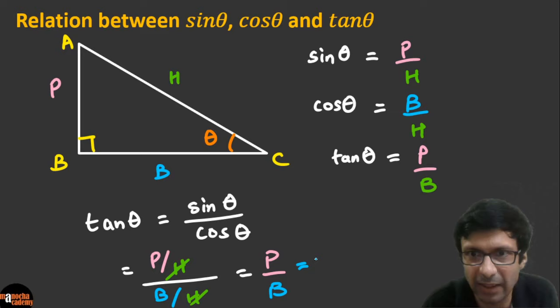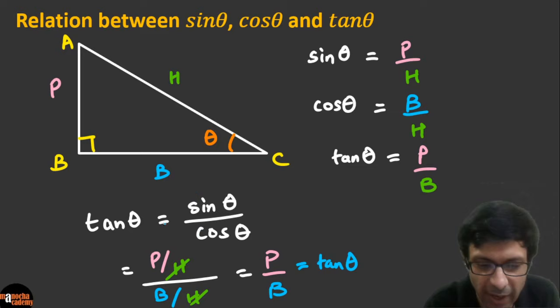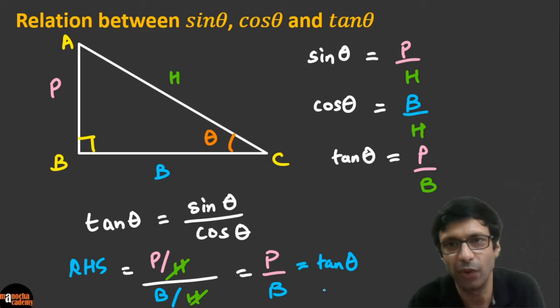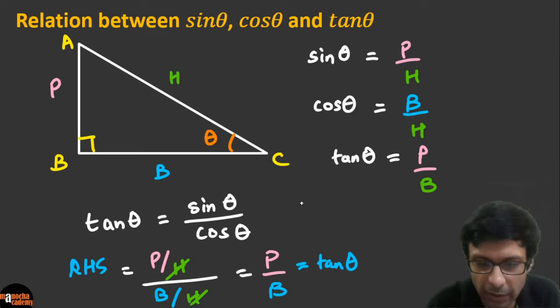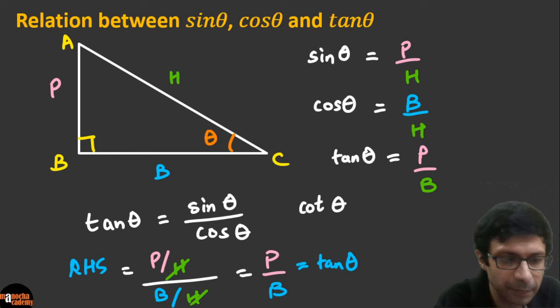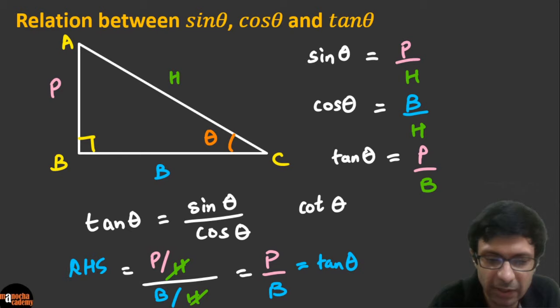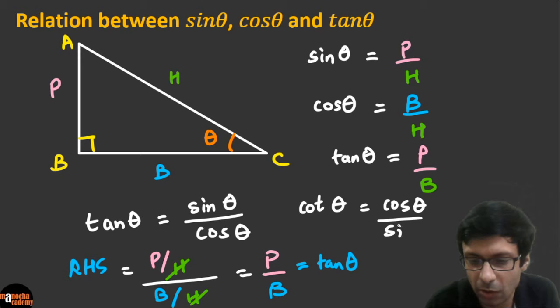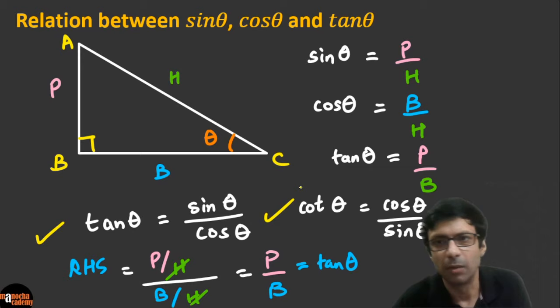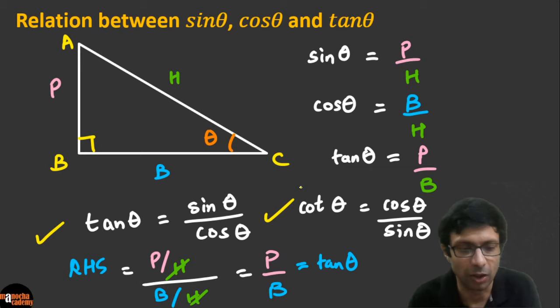Similarly, cot θ = 1/tan θ, so cot θ = cos θ / sin θ. These are very important relations that will help you in questions. Once you revise your chapter, make sure you learn these so you can use them quickly.